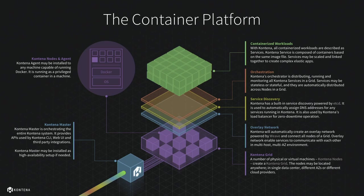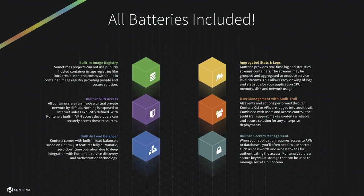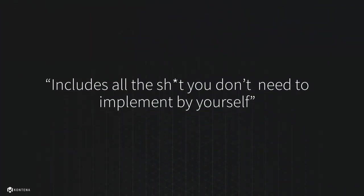Contena really comes with all batteries included: a built-in image registry for private images, built-in VPN access for the overlay network, a built-in load balancer to distribute load for your services, and we collect stats and logs of all your services and containers. We also have built-in secret management to securely store and manage secrets such as database passwords, SSL certificates, API keys, or whatever is considered a secret. It has all the bells and whistles you need to successfully run your services and microservices as containerized workloads.